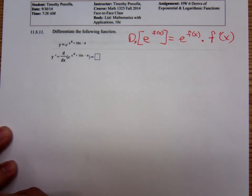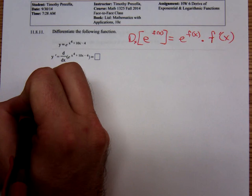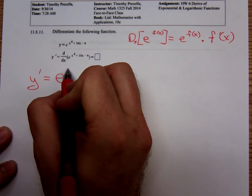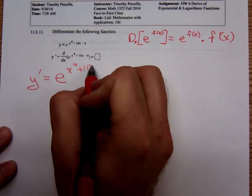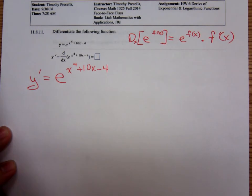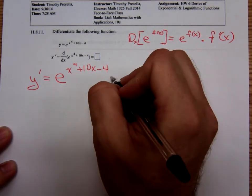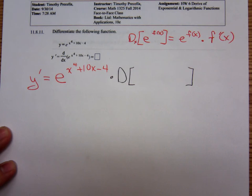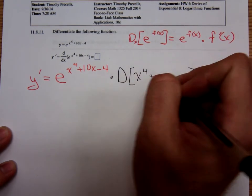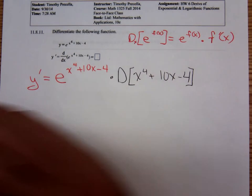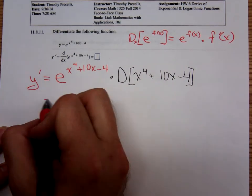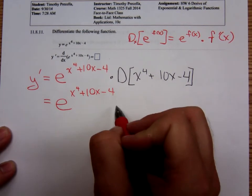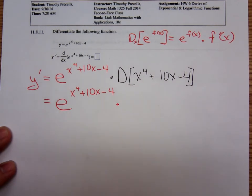So to differentiate this, y prime equals e to the power — and that's a trinomial up there: x to the fourth plus 10x minus 4. We then have to multiply by the derivative of the exponent x to the fourth plus 10x minus 4. So we have e to the x to the fourth plus 10x minus 4, times the derivative of x to the fourth plus 10x minus 4.